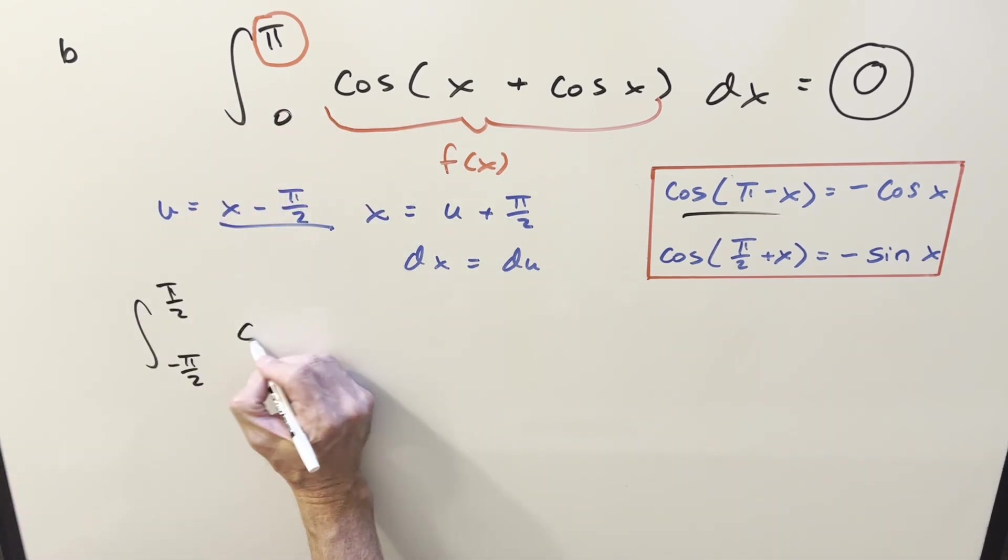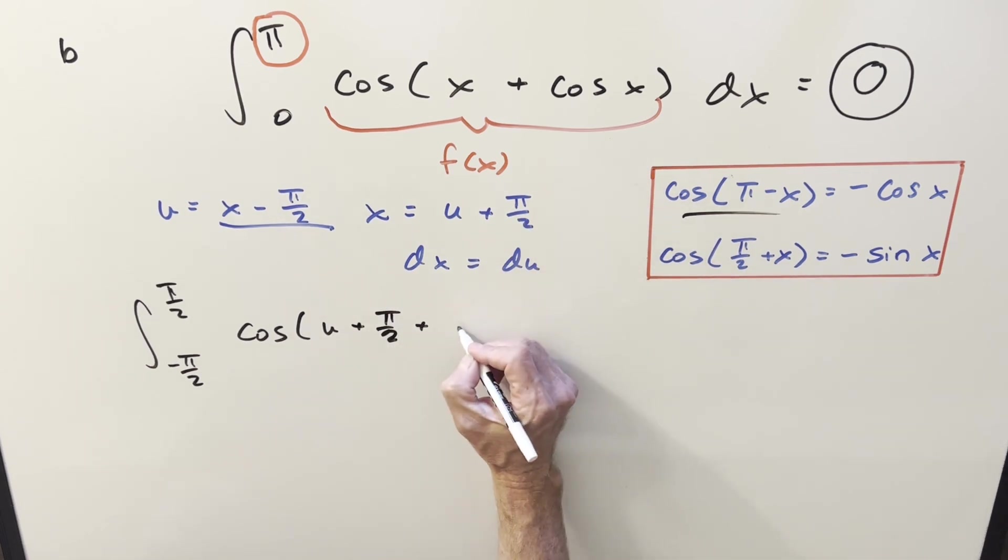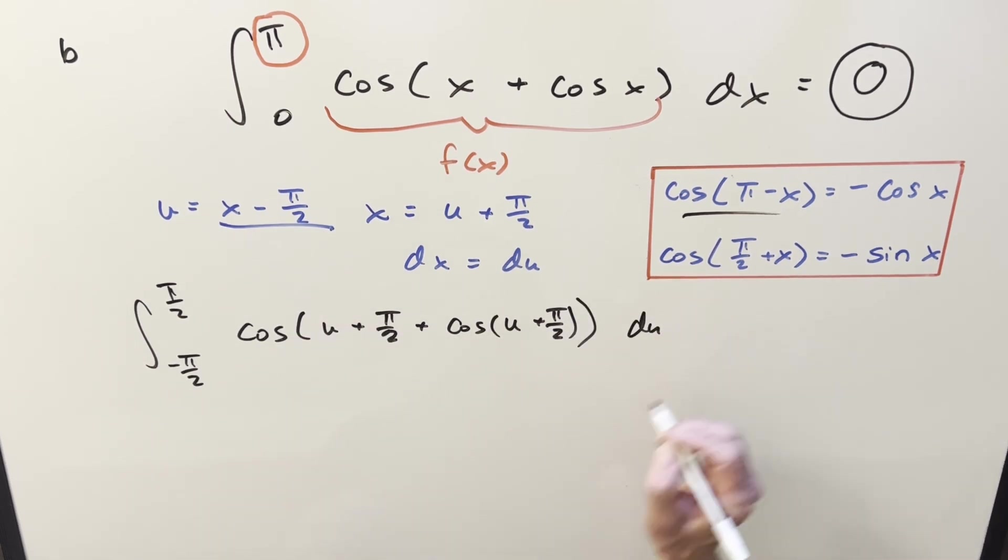It becomes an integral from minus π over 2 to π over 2. Plugging in for x with this right here, we end up with cosine of u plus π over 2, and then here it becomes cosine of u plus π over 2. And of course our dx is just du.